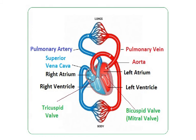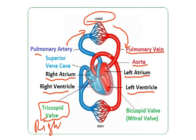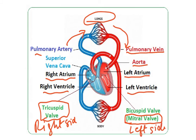Another diagram shows the basic circulation. Identify the right atrium, right ventricle, left atrium and left ventricle. You can see the aorta, the pulmonary vein bringing blood from the lungs, the pulmonary artery going to the lungs, and the valves — the tricuspid valve on the right side and the bicuspid valve on the left side, also called the mitral valve in some books.